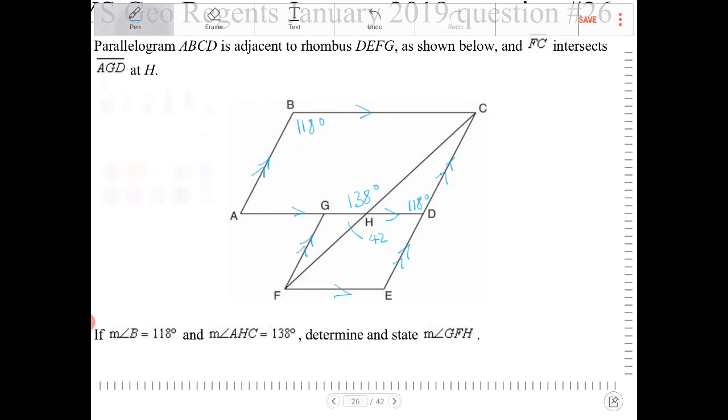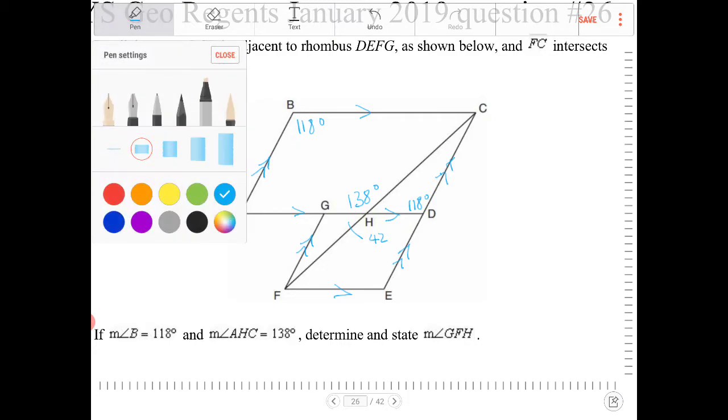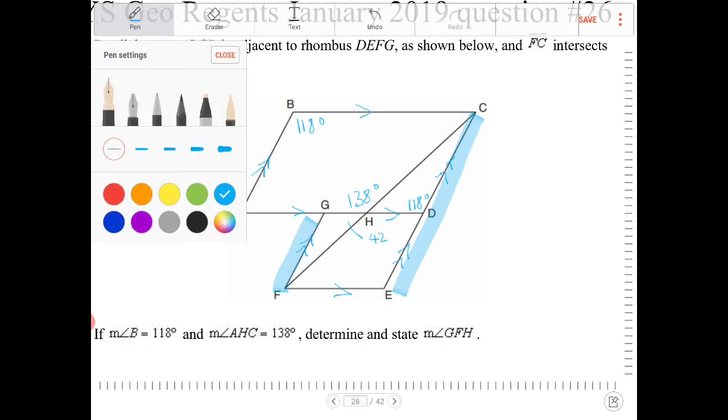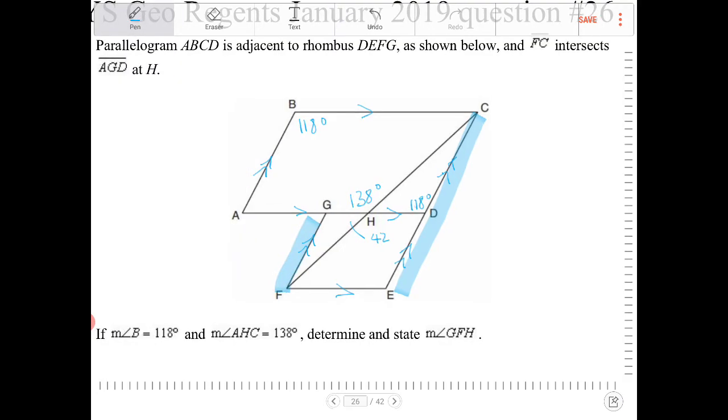Because we have parallel sides happening, this side is parallel to this side. So therefore, we have alternate interior angles. So if this angle here is 118, this angle is also 118.